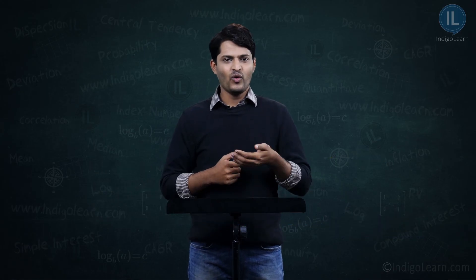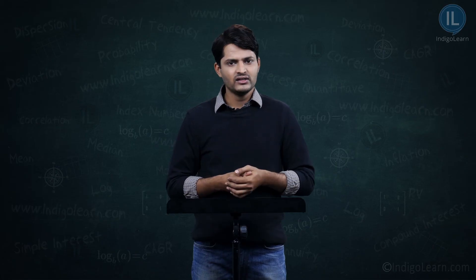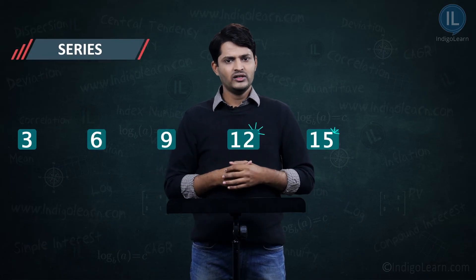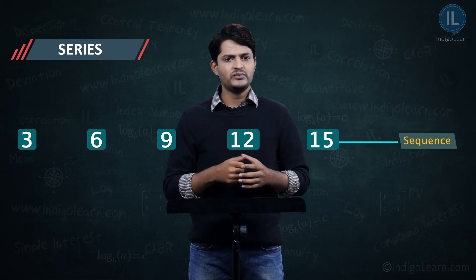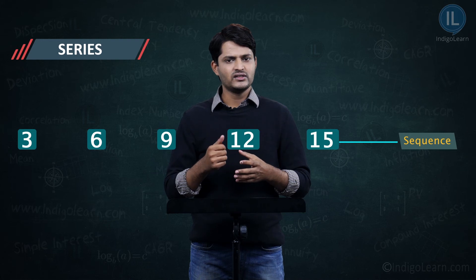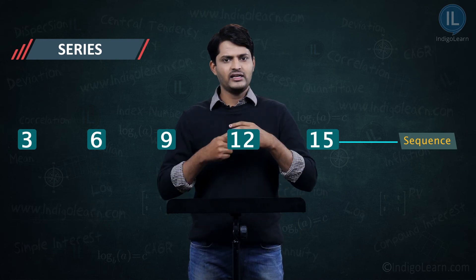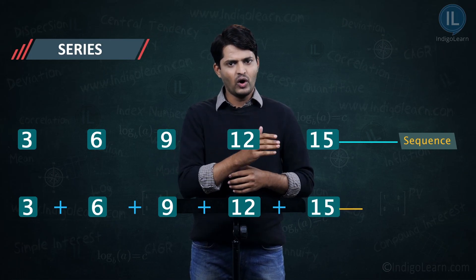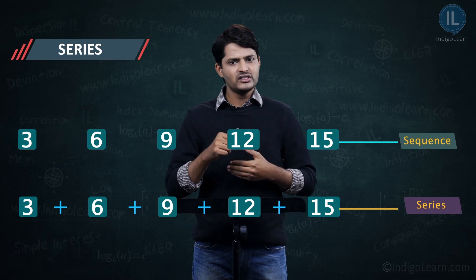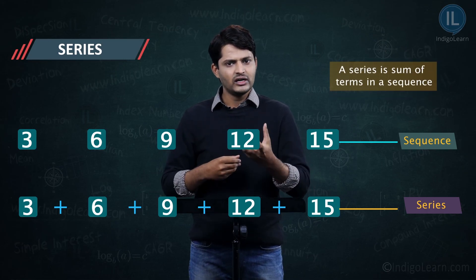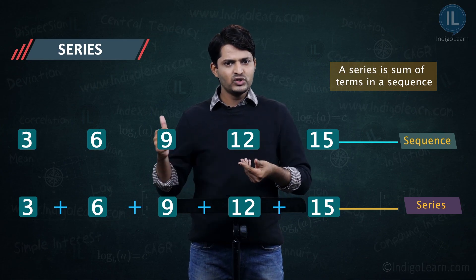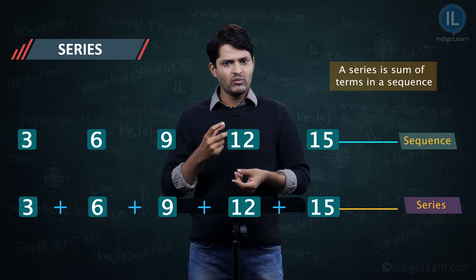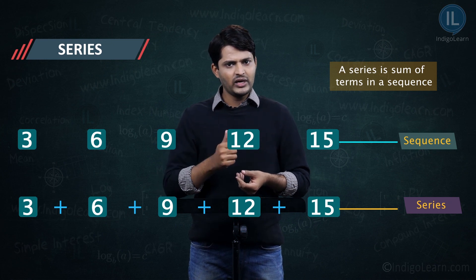Now that we understand what a sequence is, let's understand what a series is. In the previous example, 3, 6, 9, 12, 15, and so on, you can tell the next term because the difference between each term is 3. If I write this as 3 + 6 + 9 + 12 + 15 and so on — adding each of these terms — that is a series. A series is nothing but the sum of the terms of a sequence, giving a particular output.